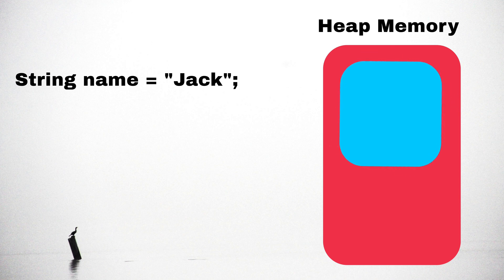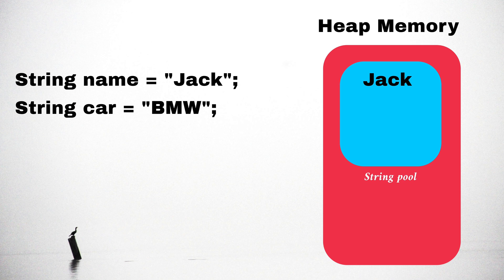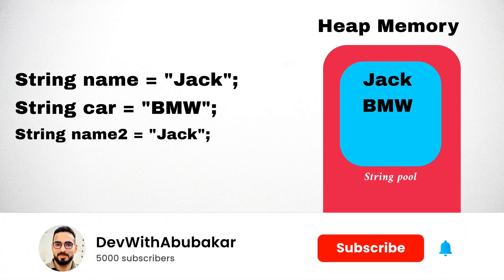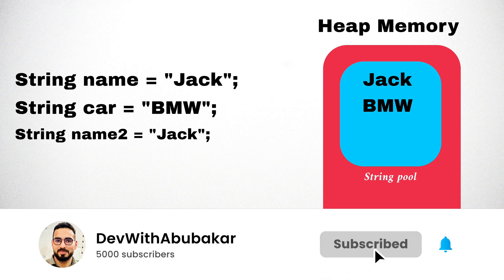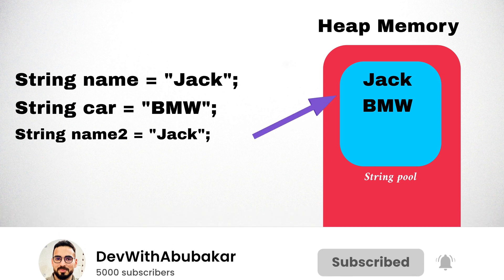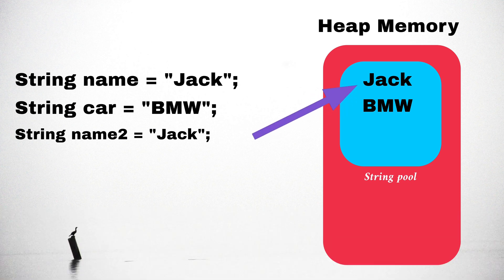Now, inside the magical realm of the JVM, there is something called heap memory. Whenever we write a string, it finds its cozy spot inside the string pool. The string pool is like a VIP club for all the string values. Here is the cool part: if we have two different variables with the same value, Java is smart. It saves the value only once in the string pool and both variables share the address of that value.